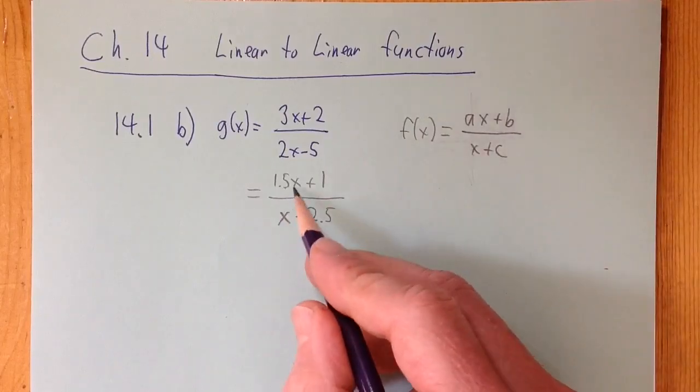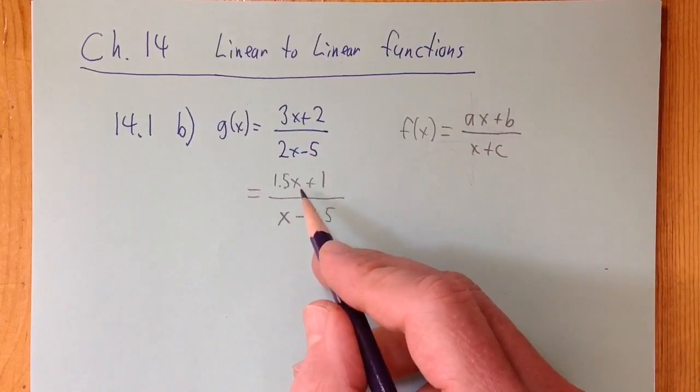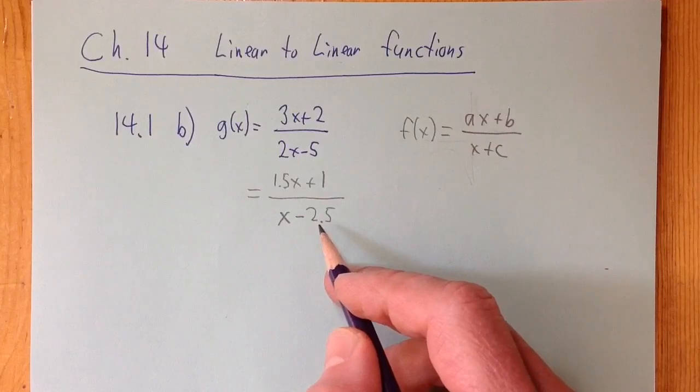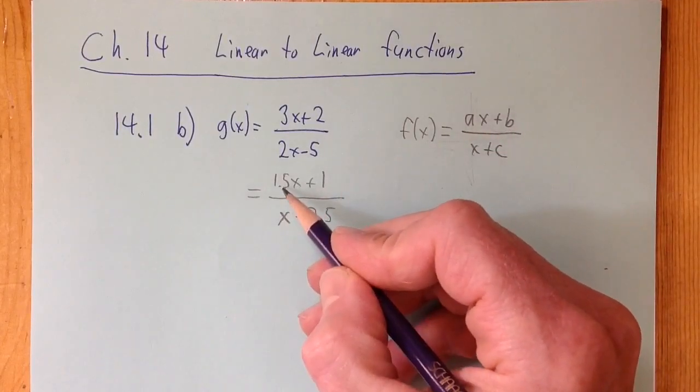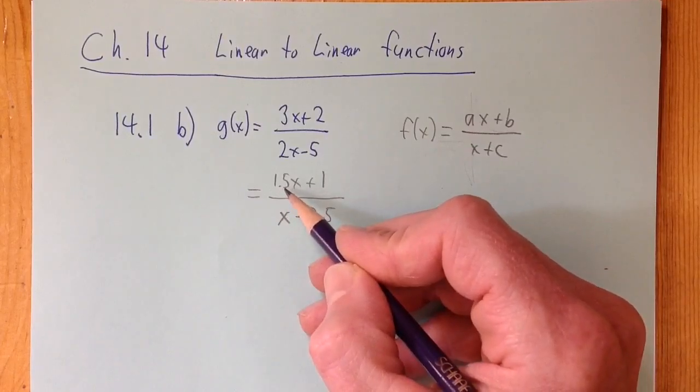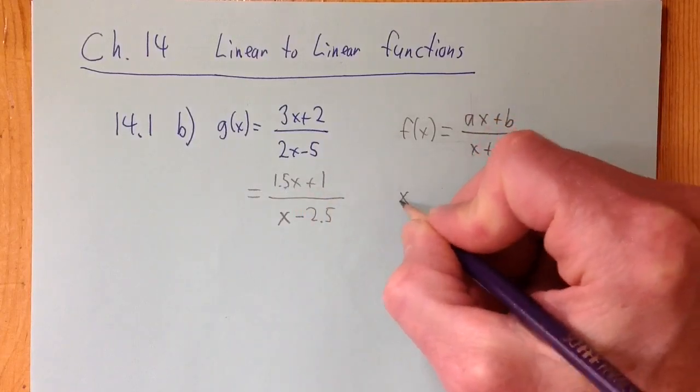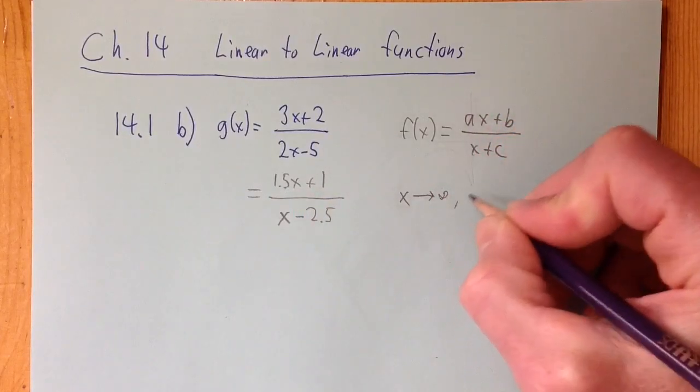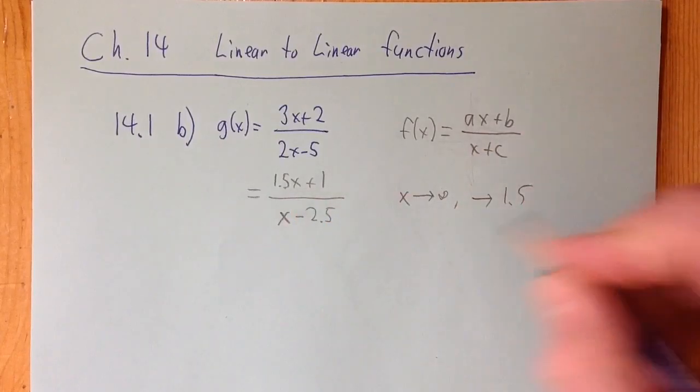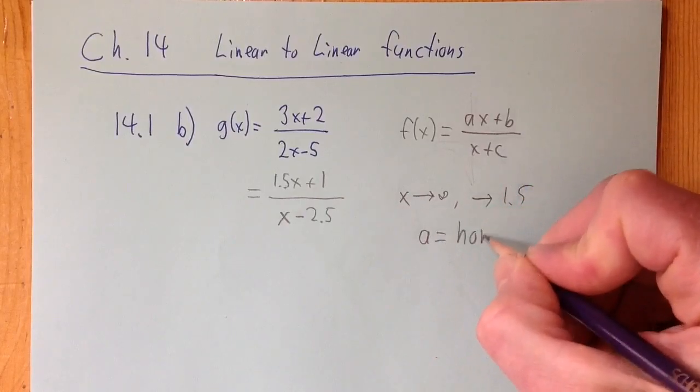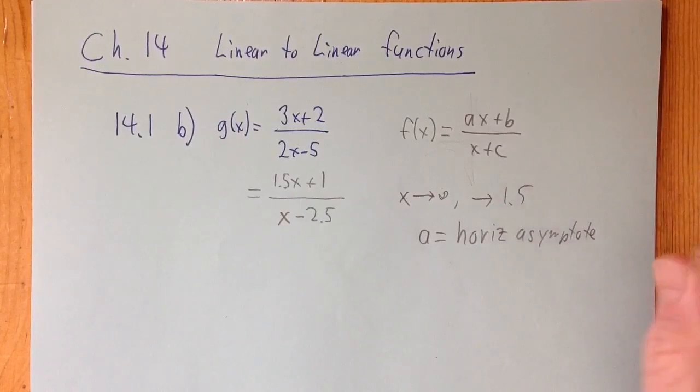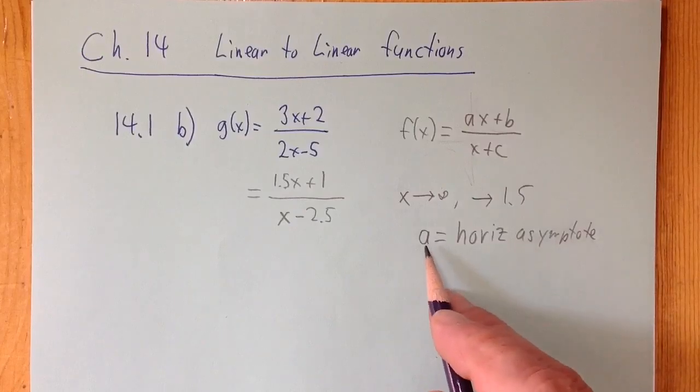But when x gets really big, let's say x is a million. When x is a million, this is like 1.5 million, this is a million. 1 and 2.5 are negligible. They don't count anymore. But the 1.5 does, because basically you have 1.5 million divided by a million, and you get 1.5. So the point is when x gets really big, or when x goes to infinity, this thing goes to a, goes to 1.5. It goes to 1.5.